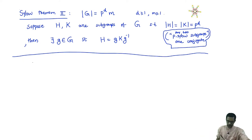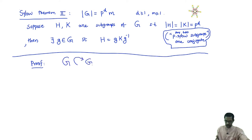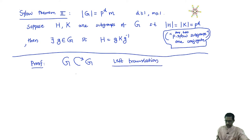Now let us prove this theorem. For the proof, we will recall something that we talked about in one of the earlier videos on group actions. Recall we have an action of a group G on itself — this is the translation action. There are actually two such actions. There is something called left translation, which is the following action: the group element G acting on the element X, where X is an element of the group G, the set on which the action is taking place. This is defined as G multiplied by X — this is called the action by left translation.